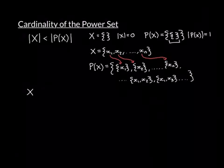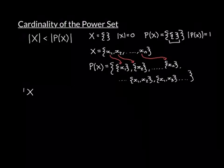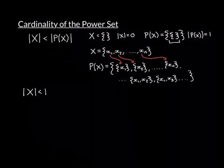So X is an infinite set and we want to prove still that the cardinality of the power set is going to be greater than the cardinality of the original set.